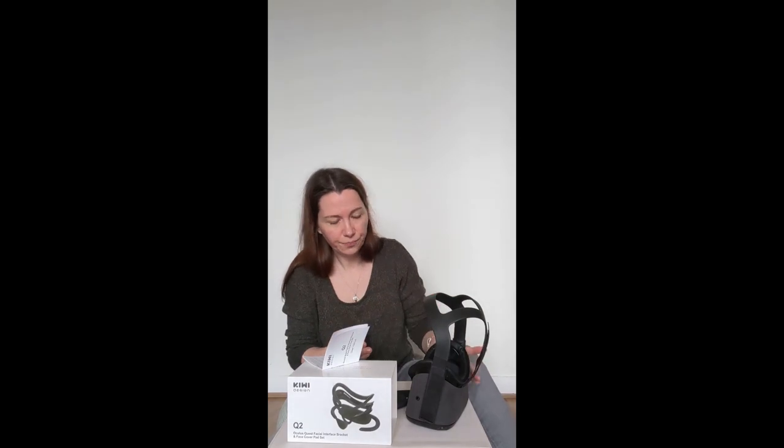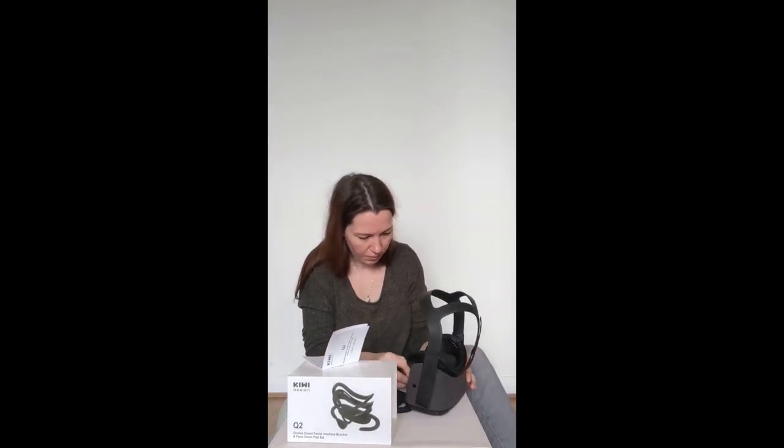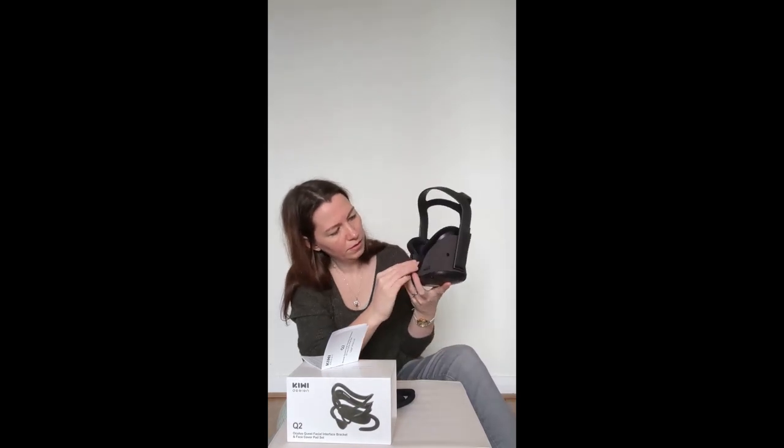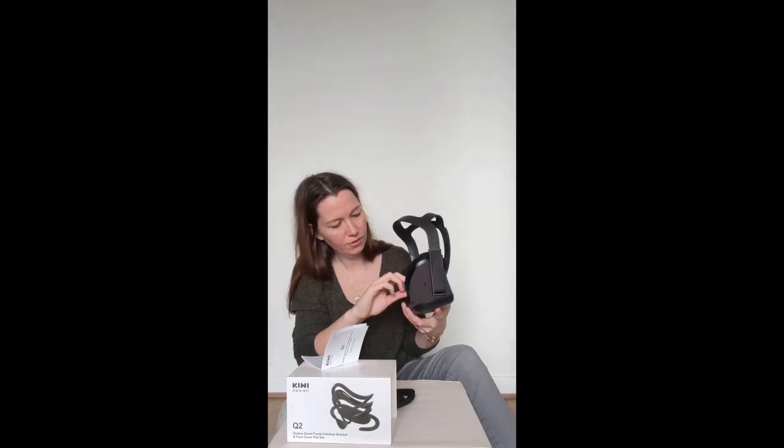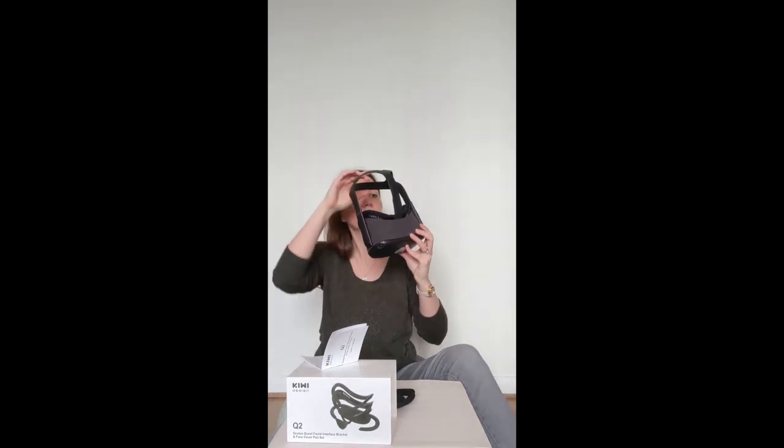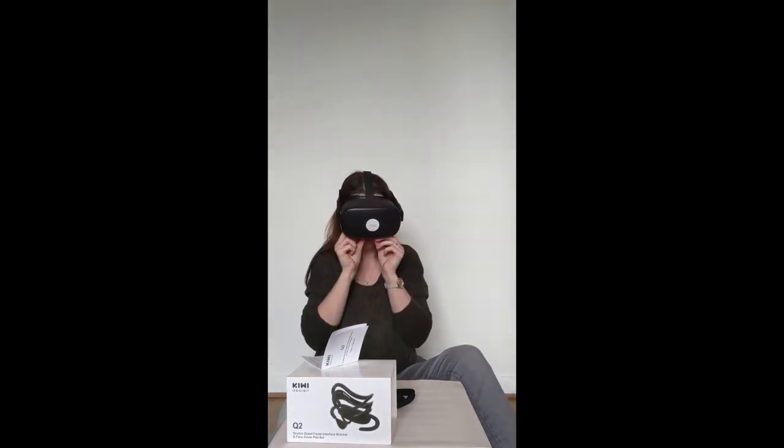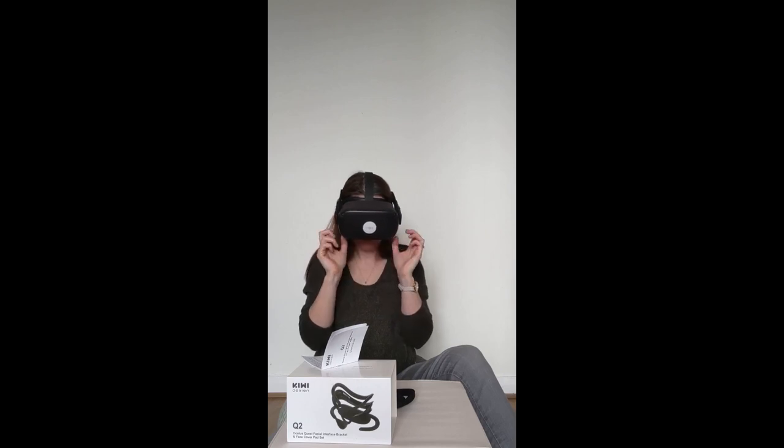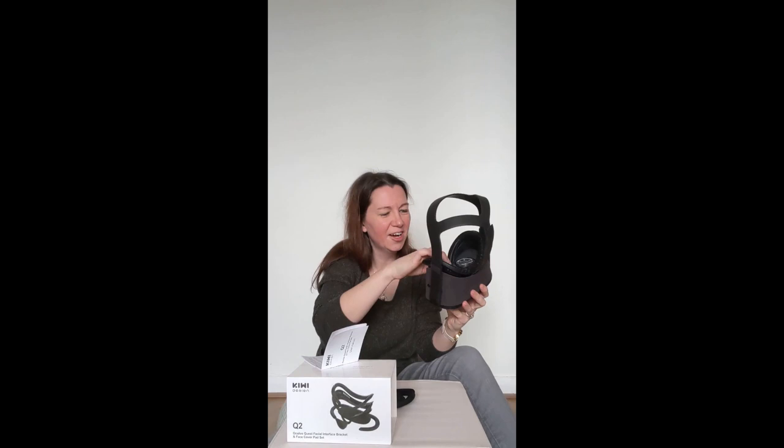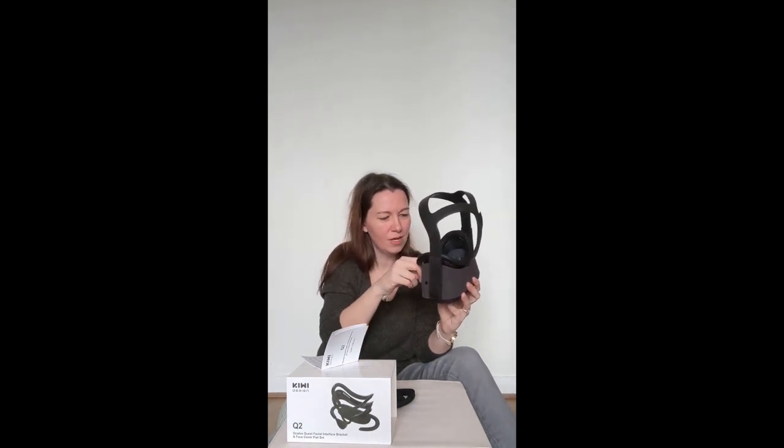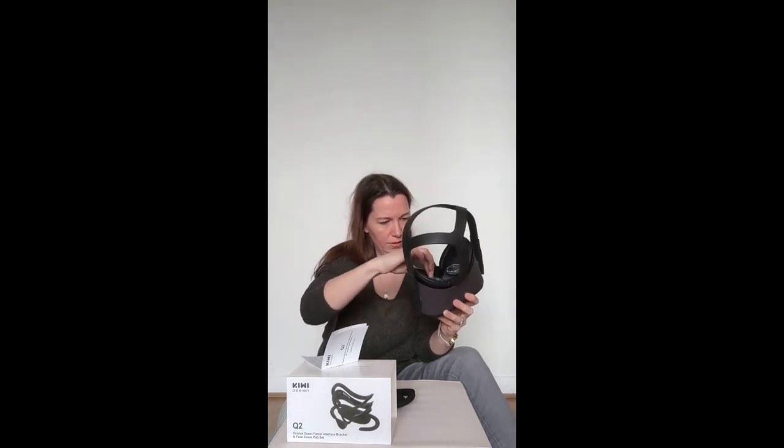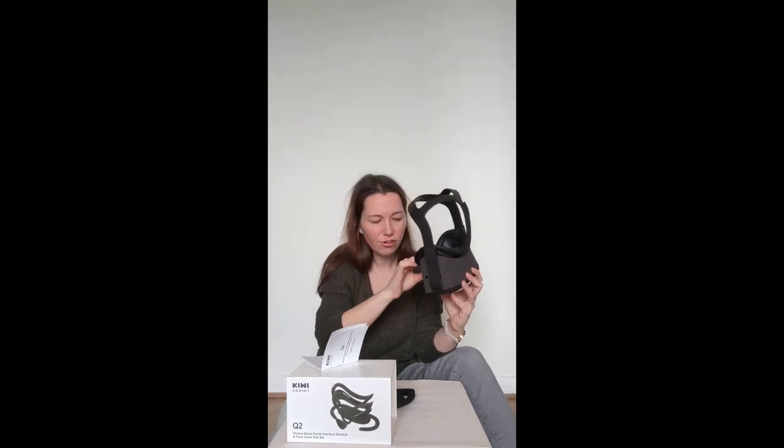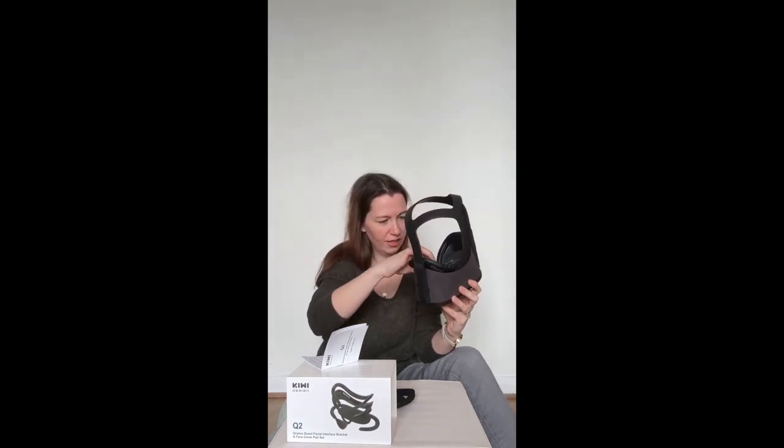And then if I try the nose bit: attach the anti-leakage nose pad to the nose part of the facial interface bracket via Velcro. Okay, so I've just taken off just a little bit of cardboard there. So I just put it in with the Velcro. Sticky sticky sticky. I just done that upside down, you know I'll see. Right, I'm going to try it. I think I put it in upside down. Now that makes more sense, yeah.